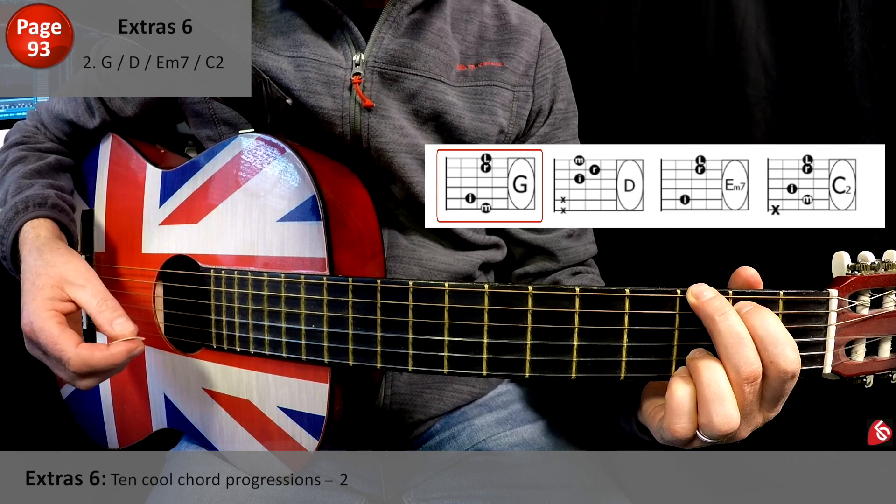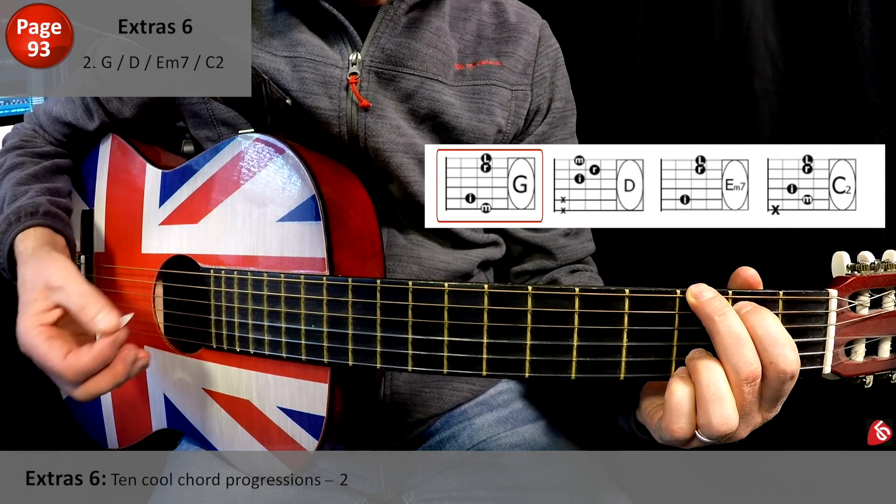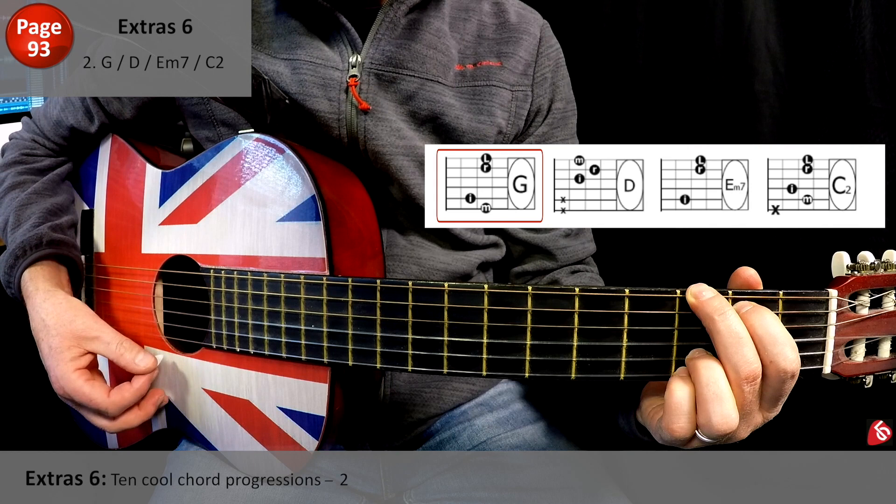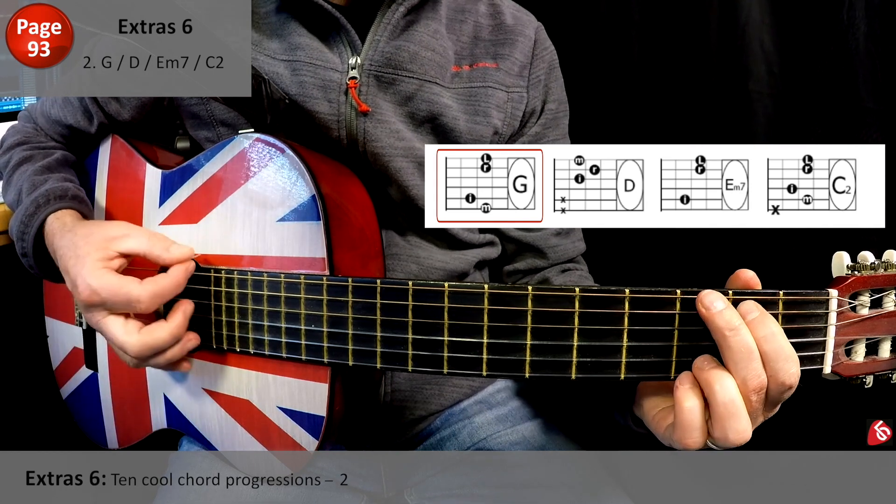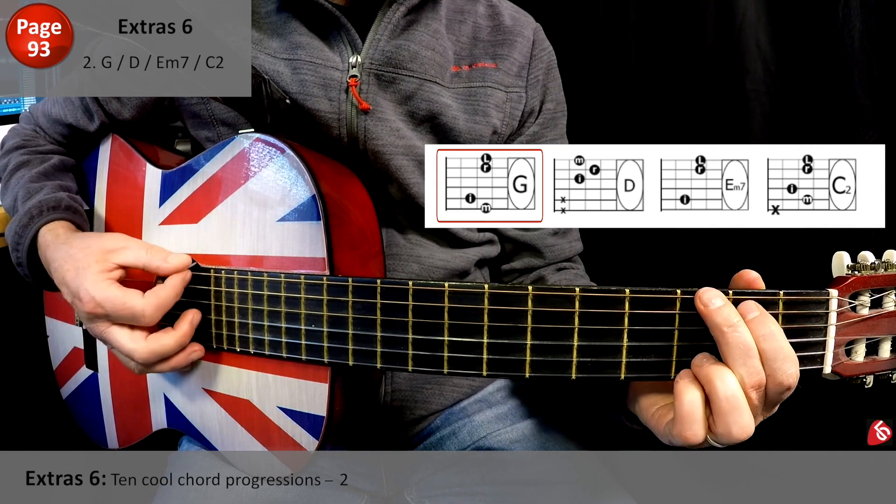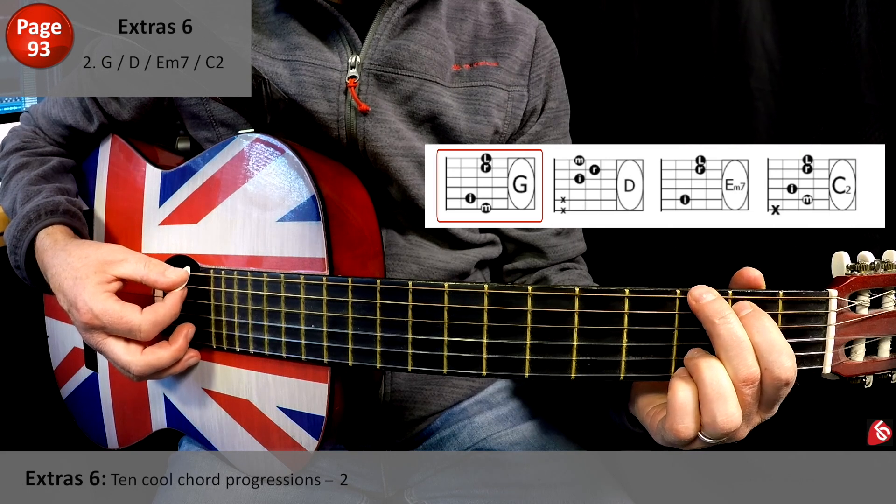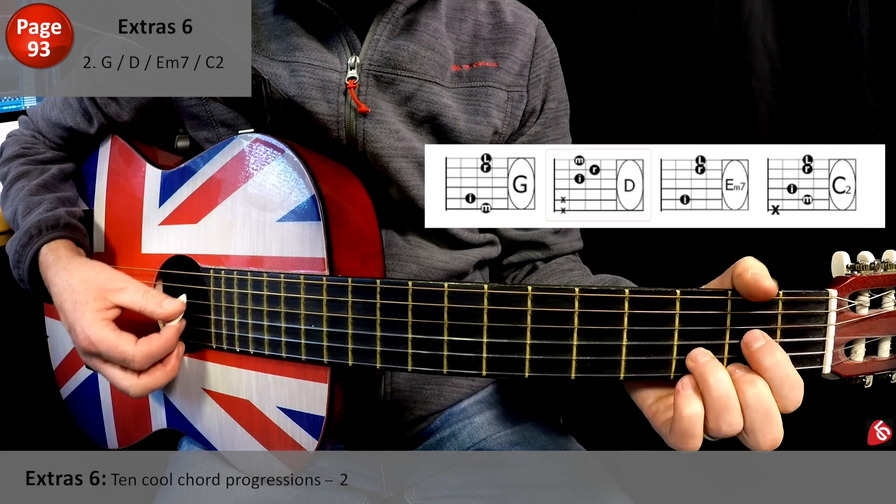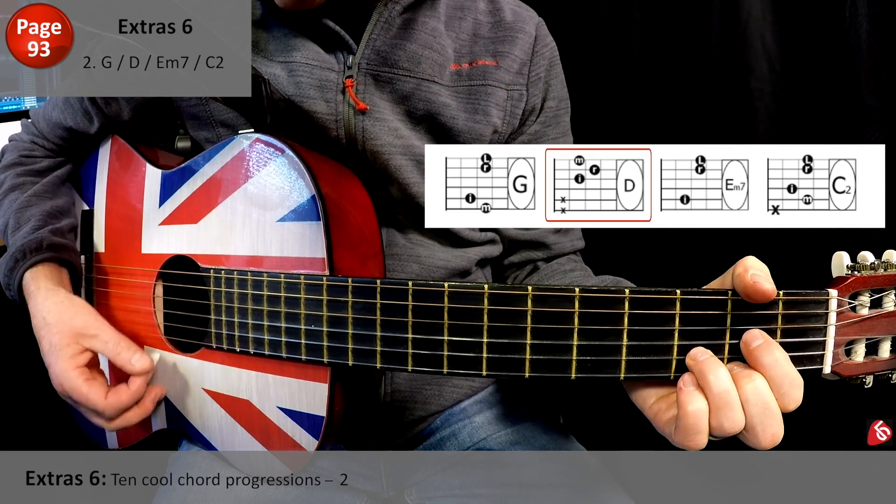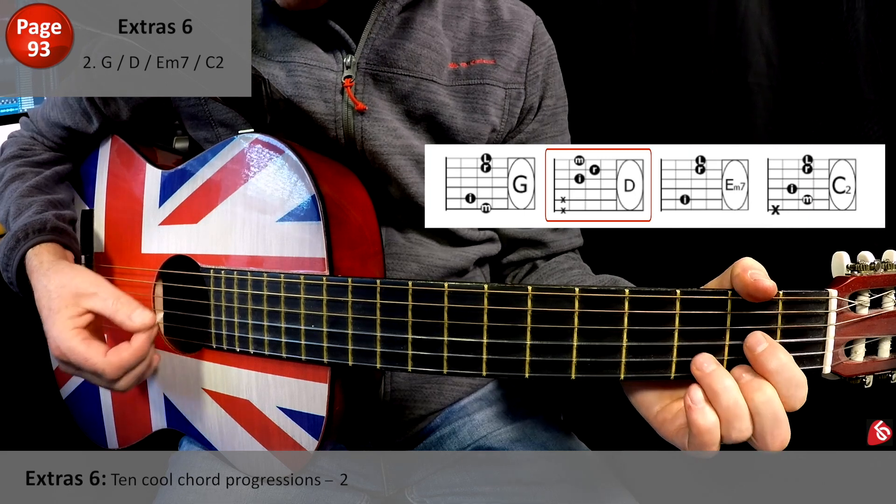So before we get to the strumming, you may want to just down strum four times, which might be easier. But again, with everything else, it's trying to change in time. That's what we want to do. And then the D - by now you probably know that D, so I'm not going to spend time going over it.